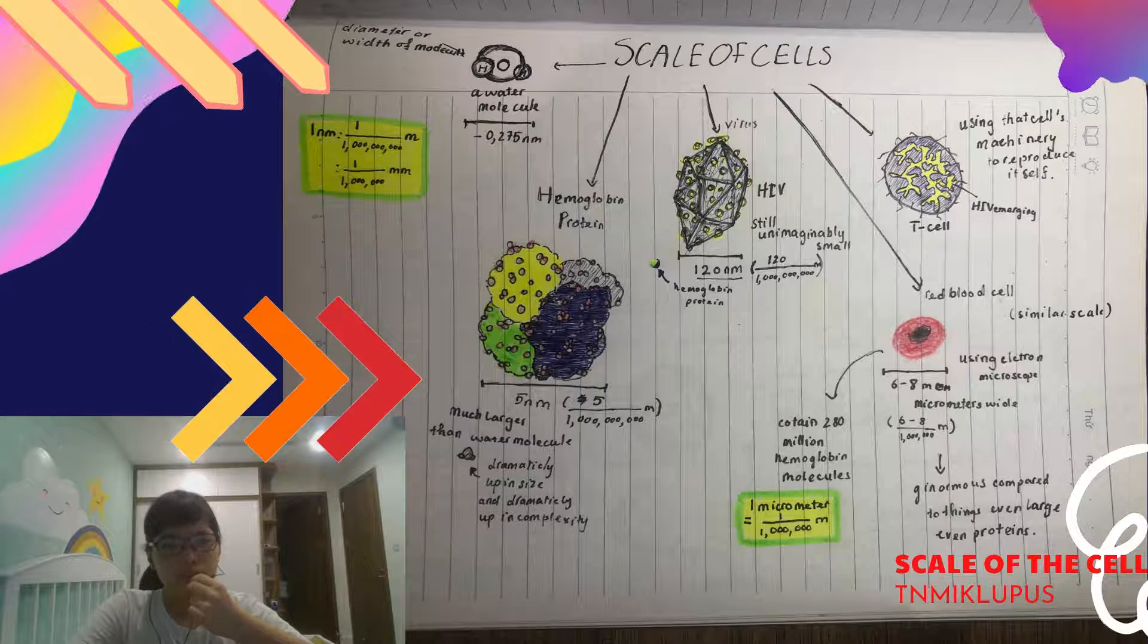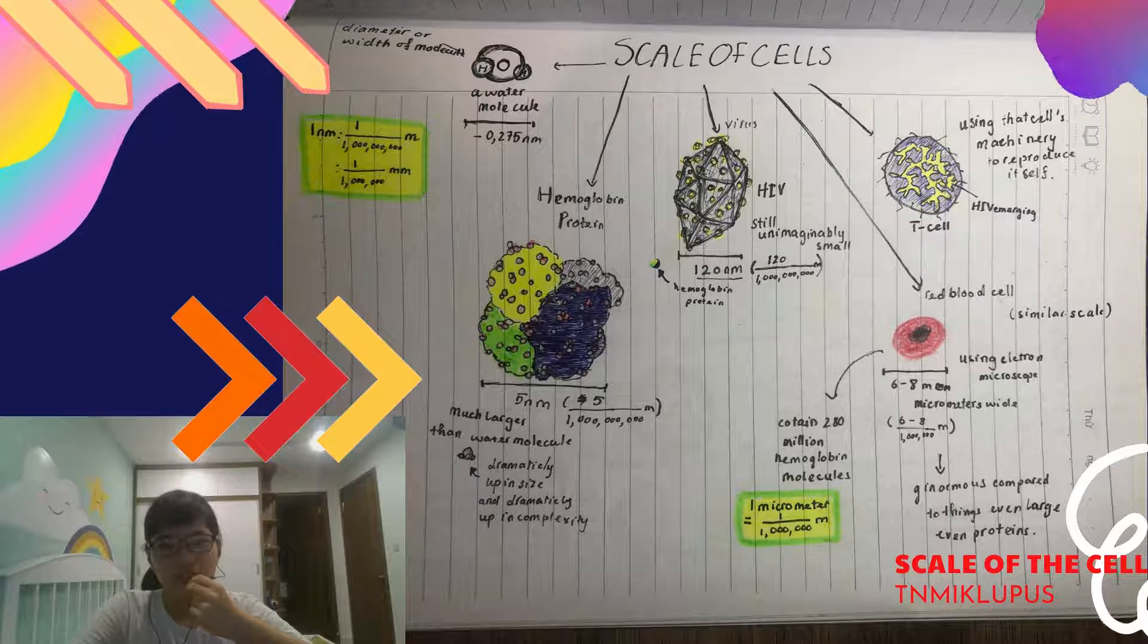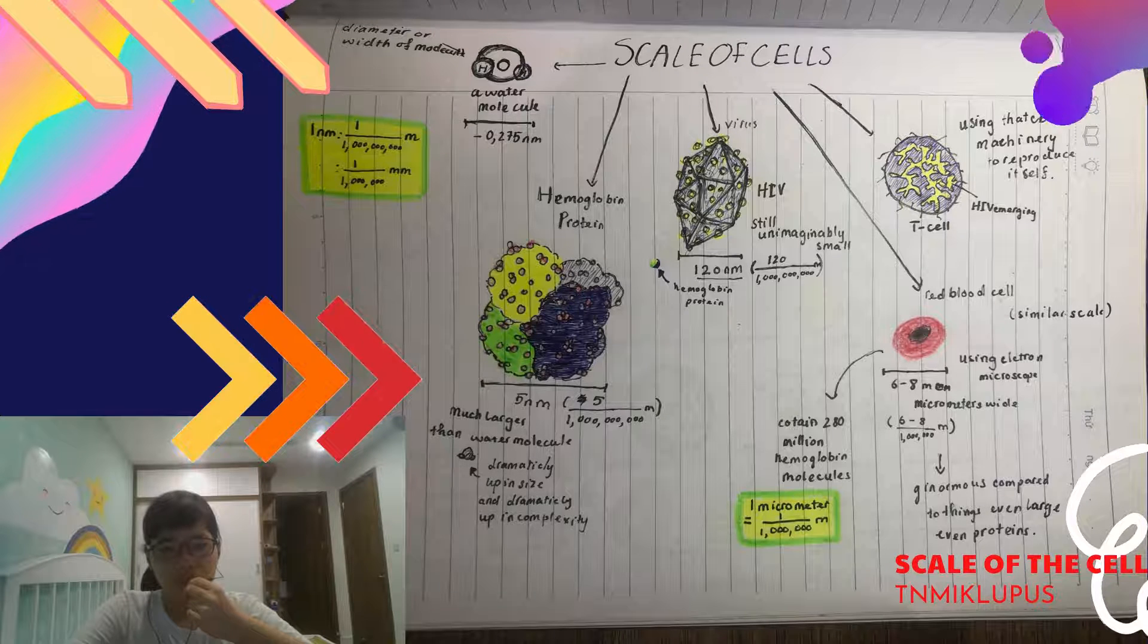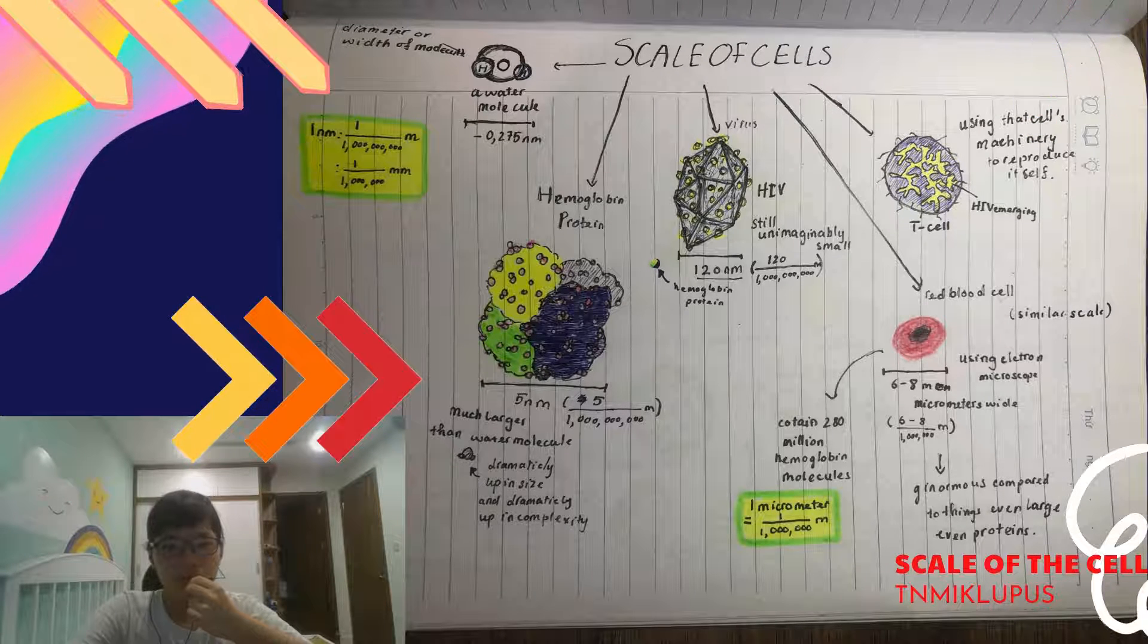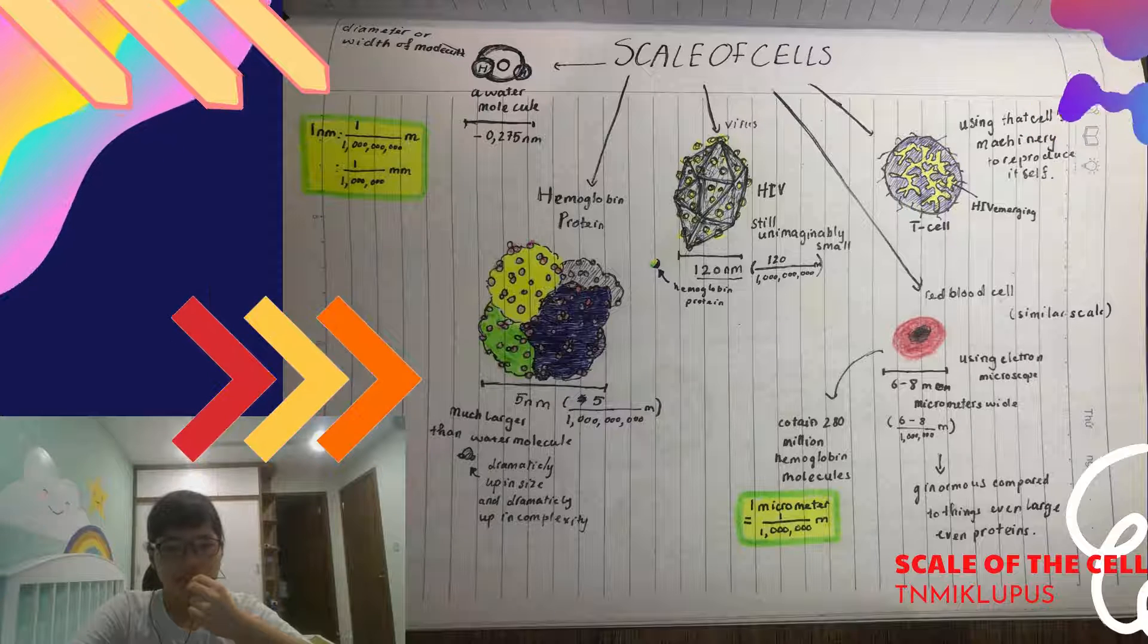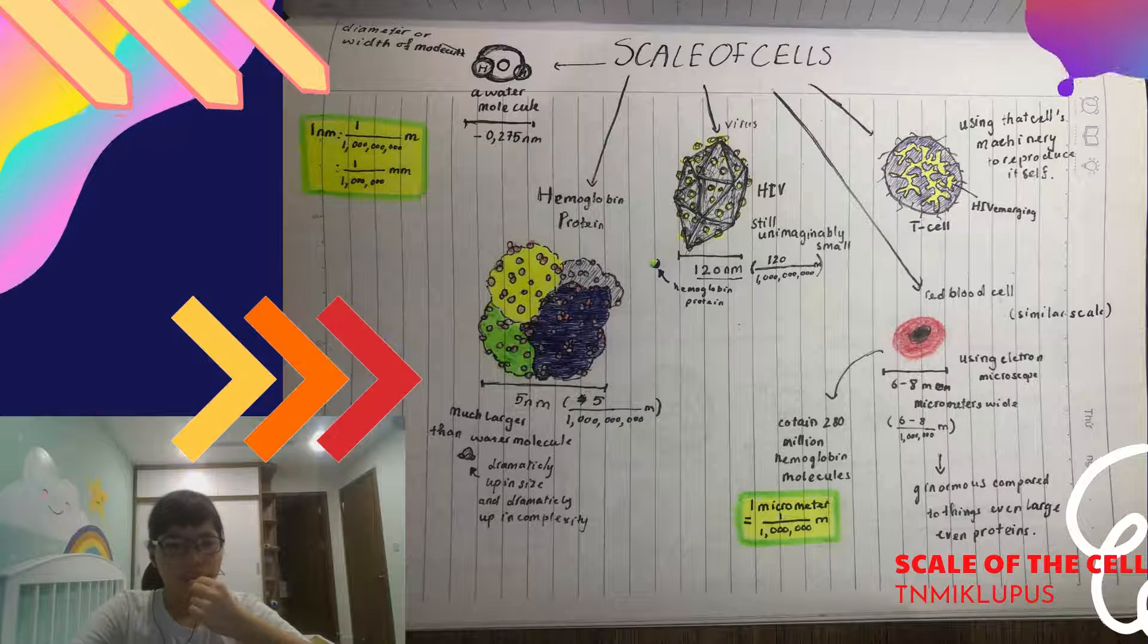It seems super small. However, it is bigger than the water molecule. You can see the little water molecule over there, it is very small. So when you go from the water molecule to the protein, you dramatically go up in size and dramatically up in complexity.